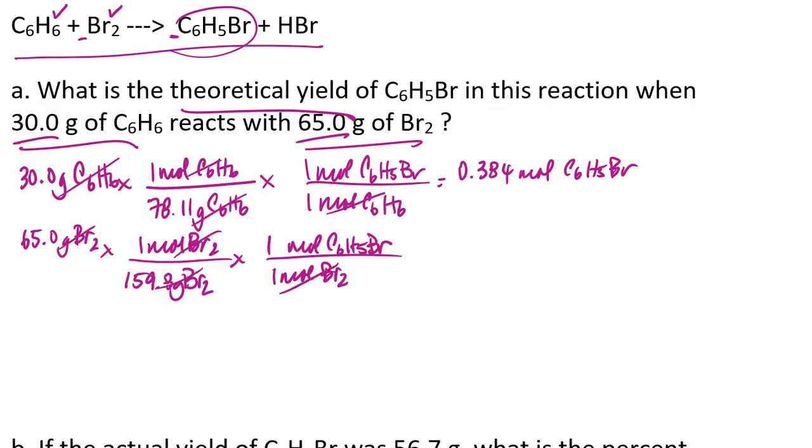And so if I go ahead and do that math, I end up with 0.407 moles of bromobenzene. And so since the lesser amount of product is actually obtained when I use the 30 grams of benzene, that makes the 30 grams of benzene my limiting reactant, which means that I should base any stoichiometric calculations off of the stoichiometry of the benzene.